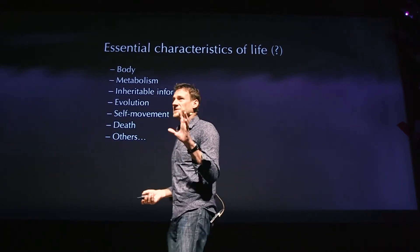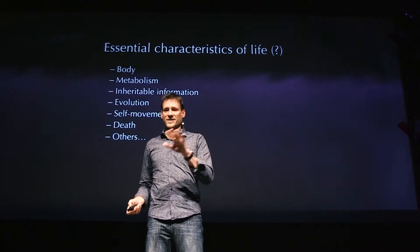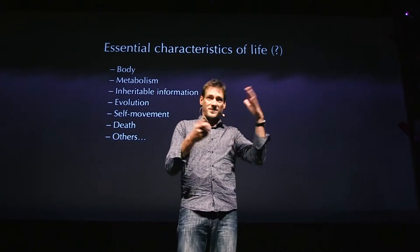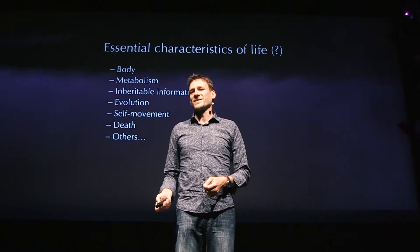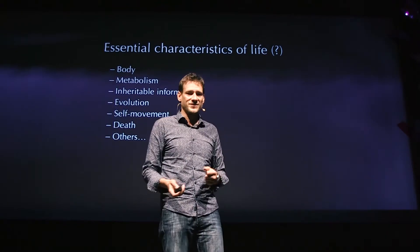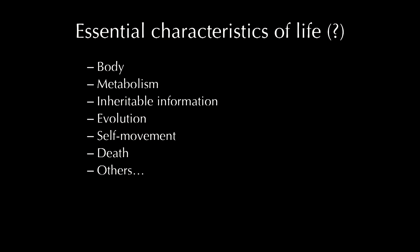When we speak about studying life through artificial life, we can compile a list of essential characteristics of life. Life should have a body, a metabolism to convert energy and resources, some sort of inheritable information to pass on to offspring, the ability to evolve, the ability to move to find resources, and of course all living systems should have some sort of death. These are the kinds of things we want to study in the laboratory using chemical systems of artificial life.